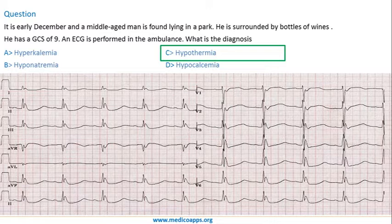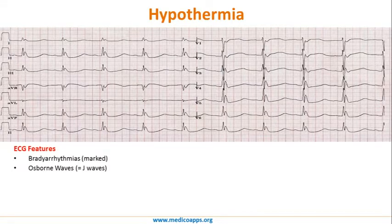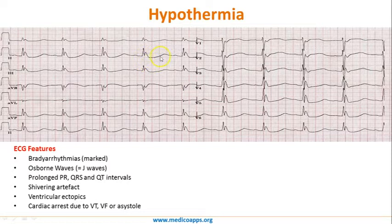In hypothermia, the ECG is marked by brady-arrhythmias and Osborne waves (the J waves) — this is characteristic. You can also find prolonged PR interval, prolonged QRS interval, and prolonged ST/QT interval. Here you can see a huge prolongation of the QT interval.